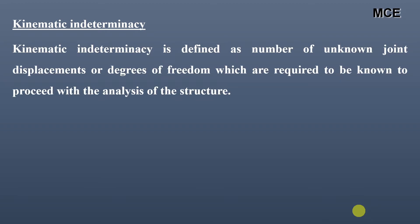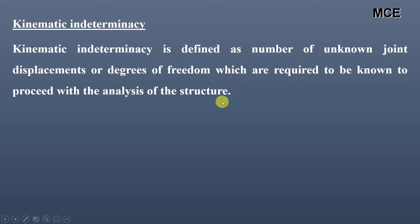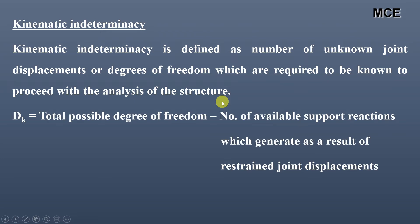First, the definition of kinematic indeterminacy. Kinematic indeterminacy is defined as the number of unknown joint displacements or degrees of freedom which are required to be known to proceed with the analysis of the structure. It is given as total possible degrees of freedom minus the number of available support reactions which are generated as a result of restrained joint displacements.